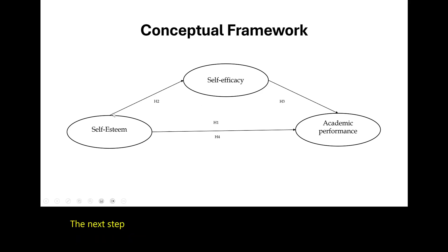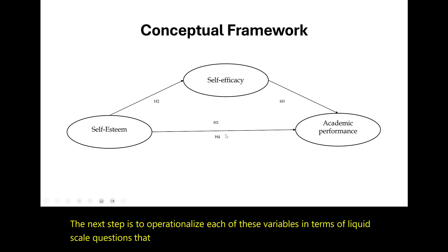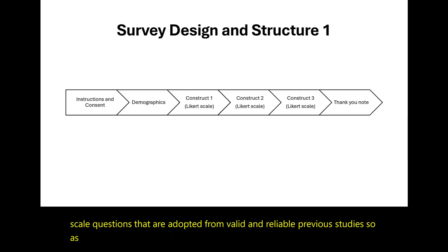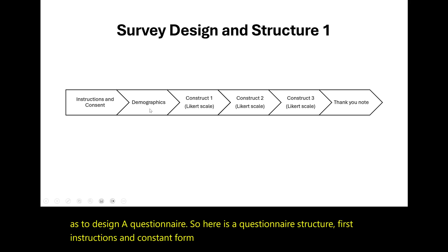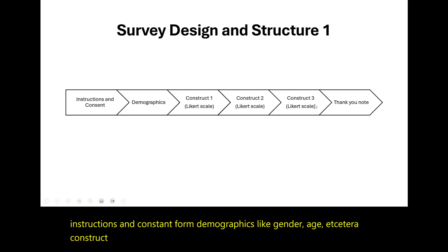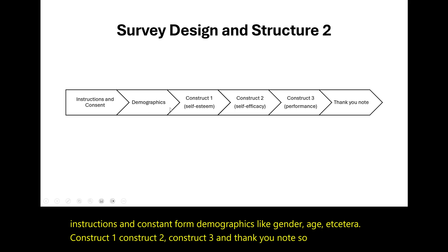The next step is to operationalize each of these variables in terms of Likert scale questions that are adopted from valid and reliable previous studies, so as to design a questionnaire. Here is a questionnaire structure: first, instructions and consent form; then demographics like gender, age, etc.; then construct one, construct two, construct three; and a thank-you note.